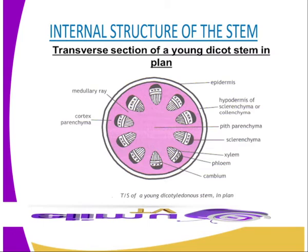Now we can define the function of each part as you can see from the diagram. Starting with the epidermis: the epidermis is a single layer of cells covering all plant organs. The epidermis cells are elongated in the direction of the stem length and flattened. They have no chloroplasts, and the outer walls are covered by a waxy cuticle that prevents excessive loss of water through evaporation.